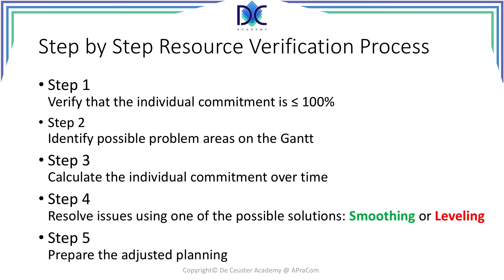Let's look at the five-step resource verification process. Step one: we look at every resource and verify that the resource is not allocated more than 100% to the tasks they will be working on. Step two: we look at the resources added to the Gantt and try to identify possible problem areas — for example, where one resource is allocated to more than one activity at the same time, especially where those activities may be on the critical path. Step three: we calculate the individual commitment over time for the resources.